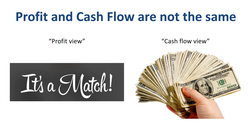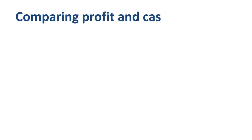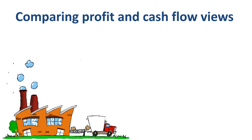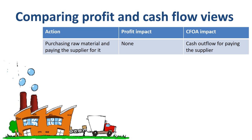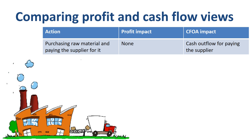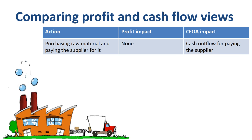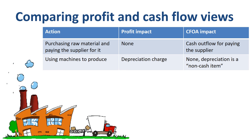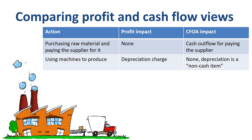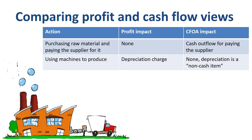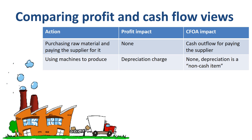Let me illustrate this with some transactions, assuming we run a small factory that produces widgets. If we purchase raw material and pay the supplier, we book a debit to inventory and a credit to cash — this impacts cash flow but not profitability. If you use machines in the factory to produce, you book a depreciation charge in the income statement, but depreciation is not relevant for cash flow since you do not pay it to anyone. For more on how depreciation works and is calculated, watch the Finance Storyteller video on depreciation.